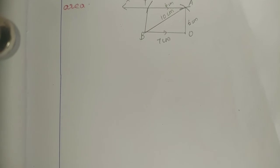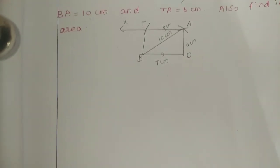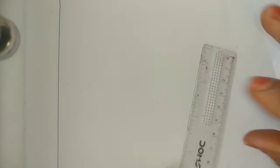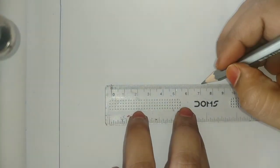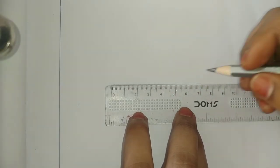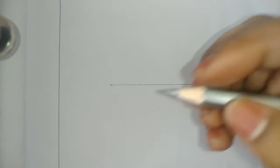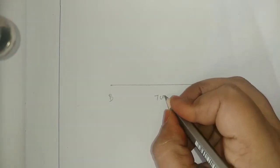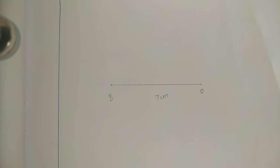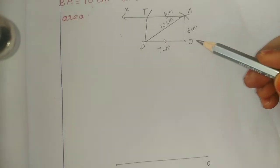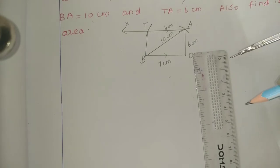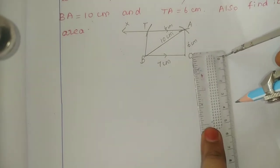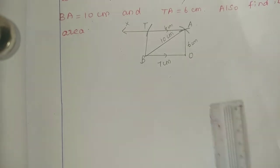This is the rough diagram. Now, what do we need to do? We will construct the trapezium and solve the area. First step: BO, how many centimeters? 7 cm. So using the scale, draw BO as 7 cm. Next step, OA is 6 cm.